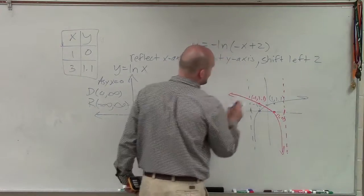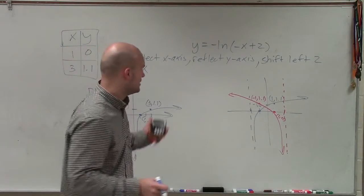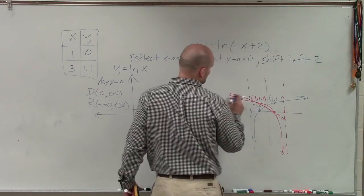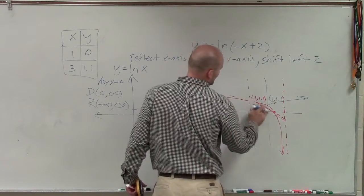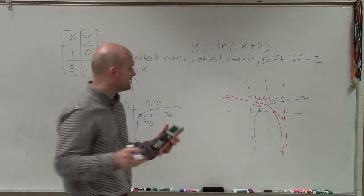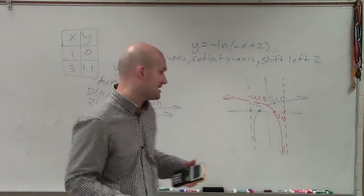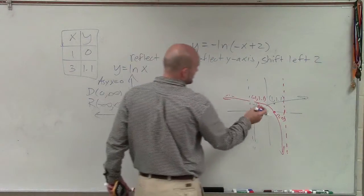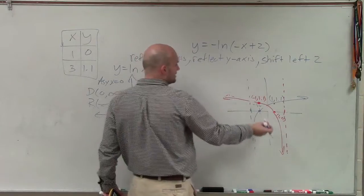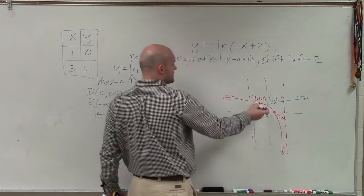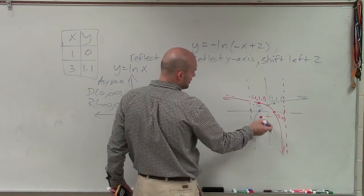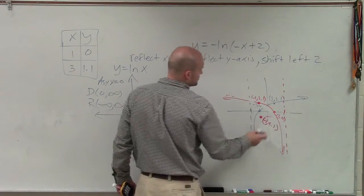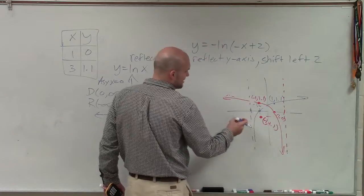So you can see the graph is now going to look like that. And you can see how it is. Really, this would be the same point. Maybe it looks something better like that. So now the graph has been reflected over the y axis, but now I need to reflect it over the x axis. So if this point is at negative 1, 1.1, now it needs to go down to negative 1, negative 1.1.